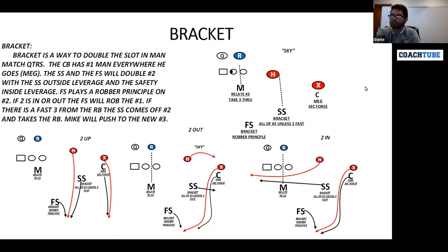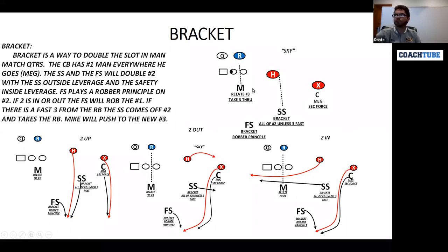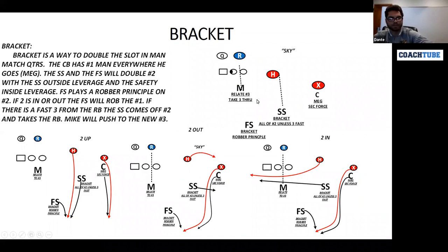The final guy we want to talk about is the Mike backer. The Mike backer is going to have all of number three unless three is fast to the flat. If three is fast to the flat, we will push it between the strong safety and the Mike backer — the Mike backer will then go cut the number two receiver, and the strong safety will come off and take the running back. We will recount. Once we have that man assigned, he is ours. We do not take another man-to-man assignment unless we have him.